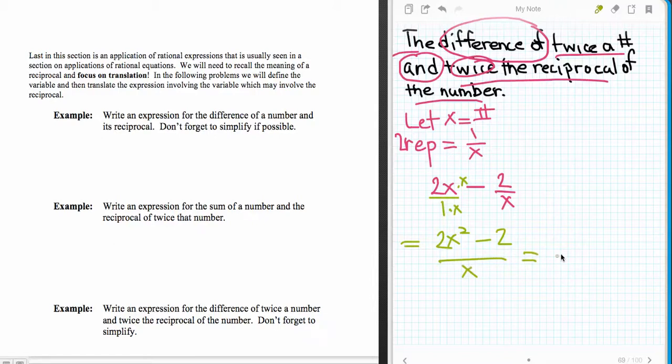From there I want to factor. There's a common factor of 2, so I'll take that out, which leaves me with x squared minus 1 all over x. Then I'll factor one more time - 2 times the conjugates, x plus 1 and x minus 1, all over x. That's where we would leave it in an intermediate algebra class.